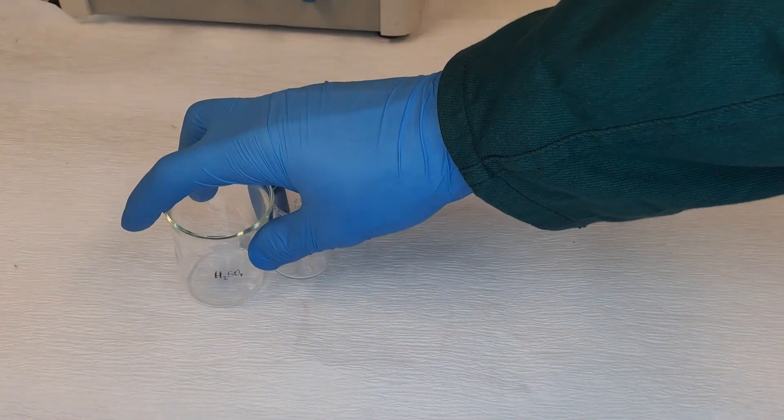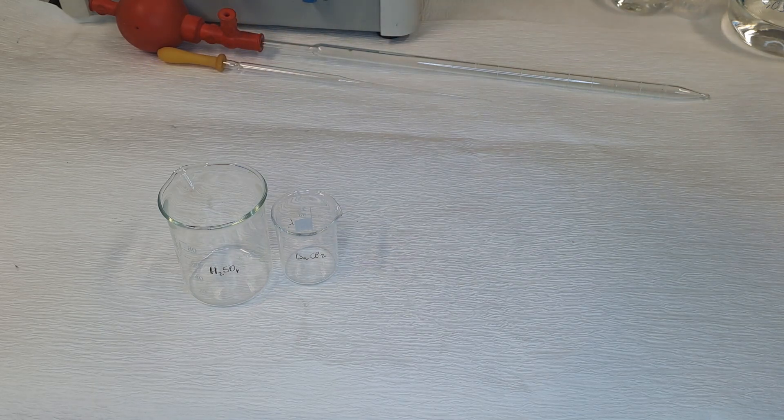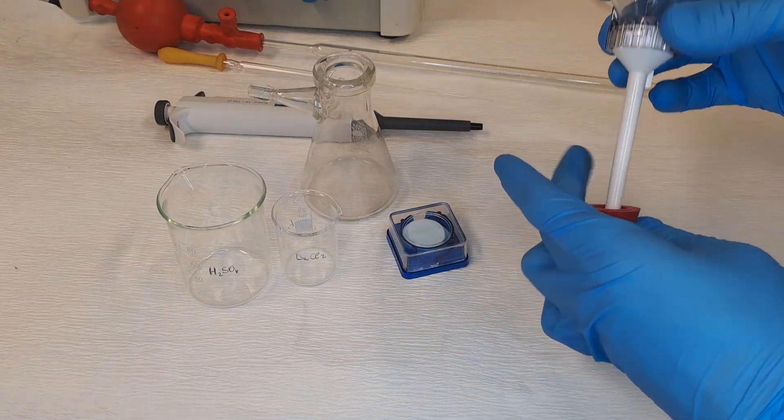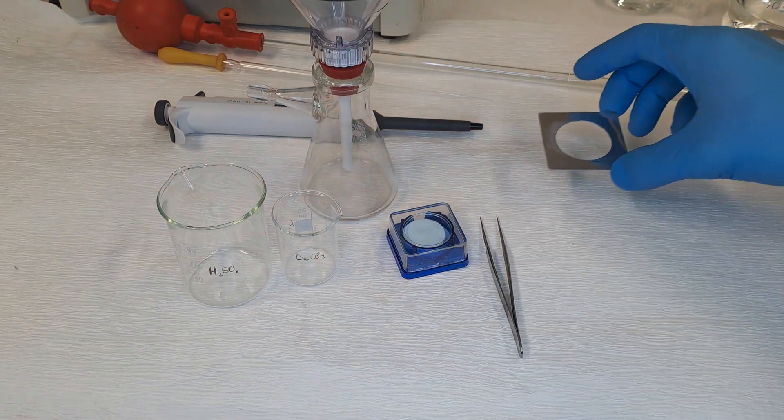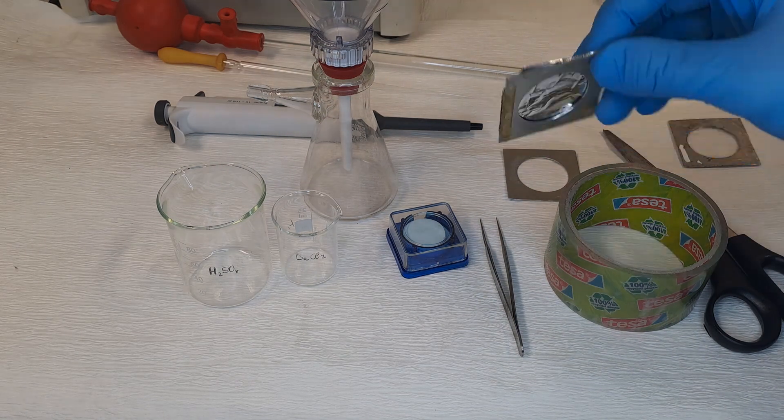Materials needed? Two beakers, a measuring pipette, a pasteur pipette, an assisting person with the micropipette set to 100 microliters, a buchner funnel with a membrane filter, tweezers, preparation frames, adhesive tape, scissors, and aluminum foil, and a heat lamp.